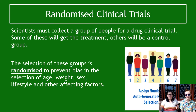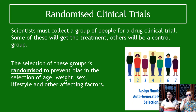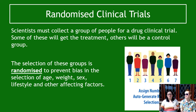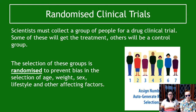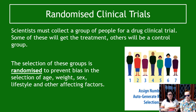In randomized clinical trials, scientists collect a group of volunteers for the drug trial — they'll advertise for people and get a number responding. The selection is randomized, which prevents researchers from biasedly selecting a particular group. For example, if you've got a drug for Alzheimer's, you shouldn't just test it on very healthy people. Instead, you should test it on people with a range of circumstances: age, weight, gender, lifestyle, and other factors that might affect how well the drug works.